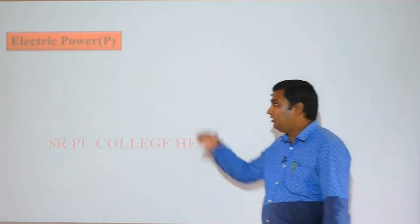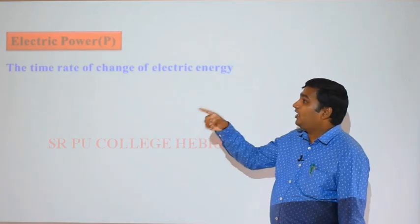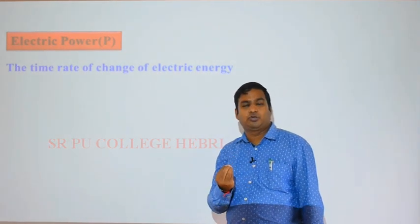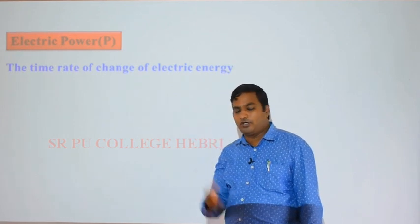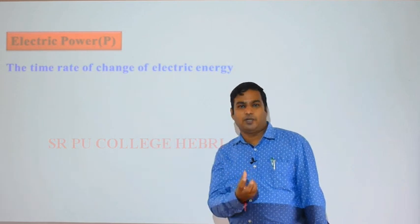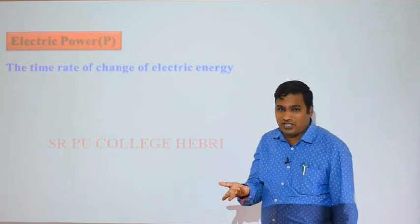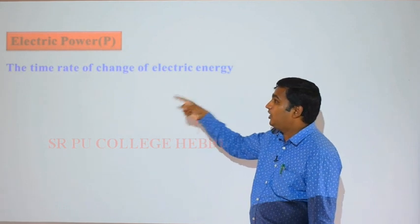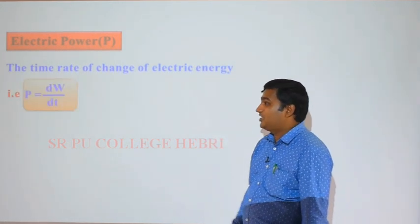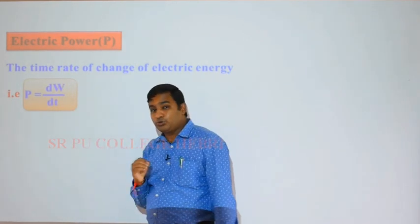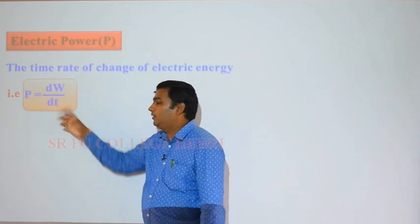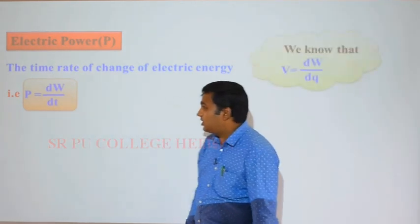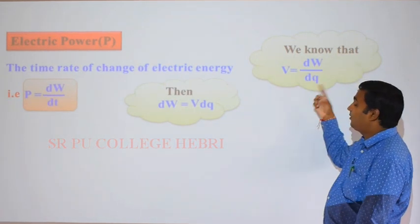Moving on to electric power, denoted by P. Electric power is the time rate of change of electric energy — P equals dW divided by dt. You already learned in first year that power is the rate of doing work, W by t. Here we define electric power as dW/dt, where work done is electric energy.